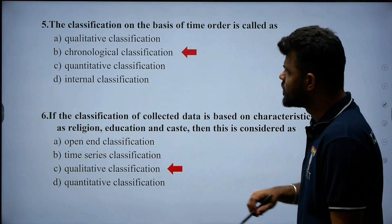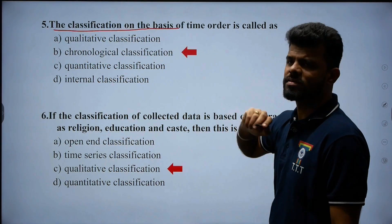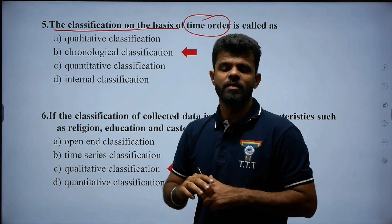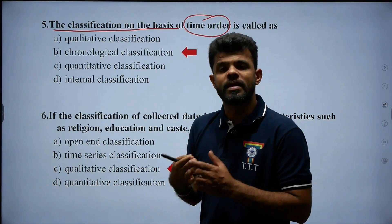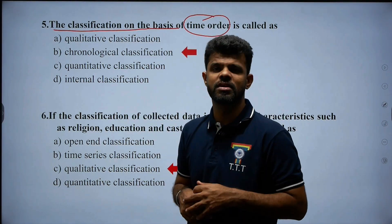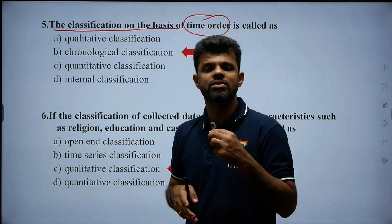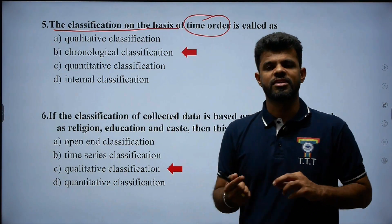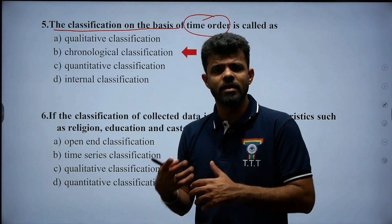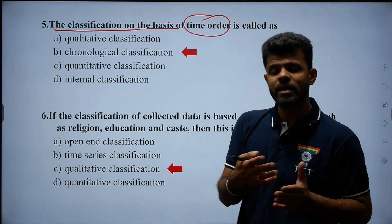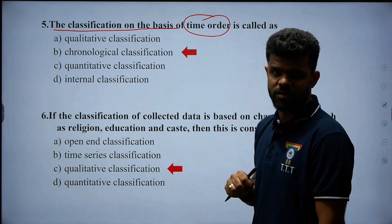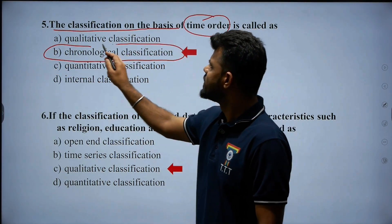Next, question number five: the classification on the basis of time. If you classify the data according to time, such classification is called chronological classification. Arrangement of statistical data in chronological order or time series order is called chronological classification. The time unit may be month, day, year, second, minute, or hour — it depends on what type of data we are collecting. Therefore, option B — chronological classification — is the right answer.